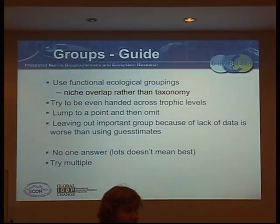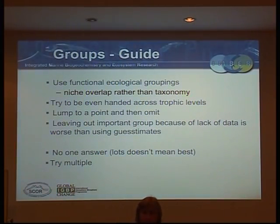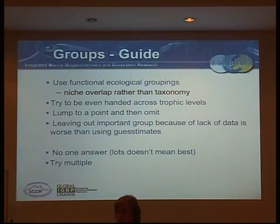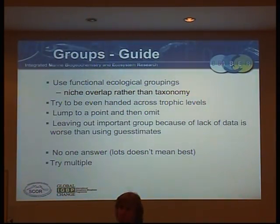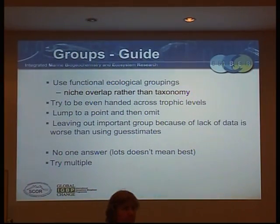One of the biggest sins of the original EcoPath models was that they lumped all invertebrates together. They'd have three different kinds of killer whale — the ones that came near people, the ones that lived near rocks, the ones that lived in open water — and then they'd have all benthic invertebrates stuck in one group. You've got to break that habit and try to think about all parts of the system on the same level of resolution.